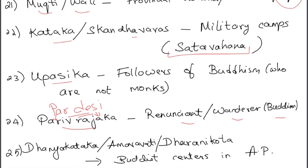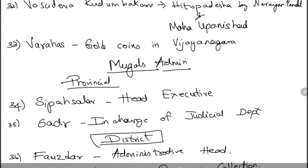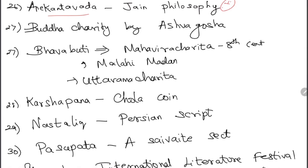Dhanyakataka, Amaravati, and Dharanikota are all names for Buddhist centers in Andhra Pradesh. Anekantavada is a Jain philosophy — such questions asking whether a term belongs to Jain or Buddhist philosophy are very common in UPSC.